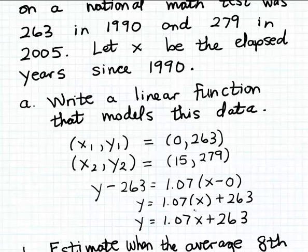So once we simplified the point slope formula, there is the formula for the linear function that models this data. It's just y, that average math score, is equal to 1.07 times x, x being the elapsed years again since 1990, plus 263.